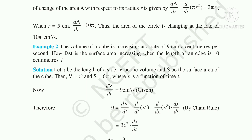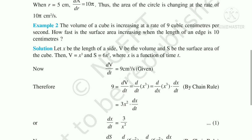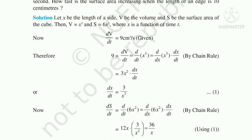The rate dV/dt is already given as 9 cm³/s. Differentiating V = x³ with respect to t using the chain rule: dV/dt = 3x² · dx/dt. Substituting dV/dt = 9, we get 9 = 3x² · dx/dt, so dx/dt = 3/x².